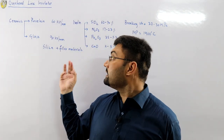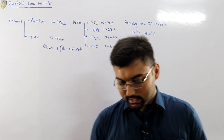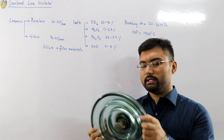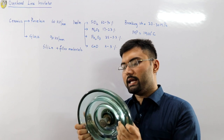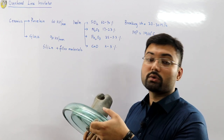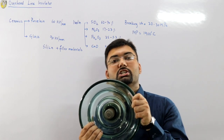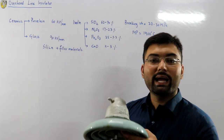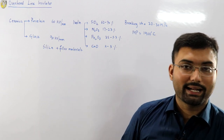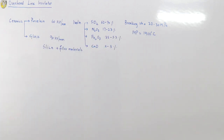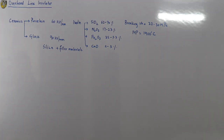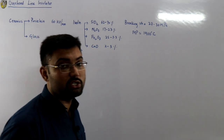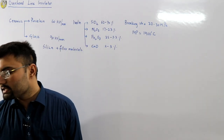I have a glass insulator here to show you the transparency — if there is any bubble, air cavity, or micro-crack, I can physically see it. Whereas for a porcelain insulator, I cannot see it physically. Also, these two insulators have significant weight: porcelain is about 5 kg and glass is about 6 kg.